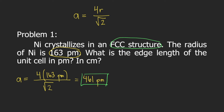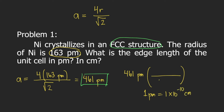The problem is also asking for the edge length in centimeters. What we need to do is convert 461 picometers to centimeters. You put 1 picometer on the bottom, and on top you put 1 times 10 raised to negative 10 centimeters. Picometers will cancel, and your unit will become centimeters. This is equal to 4.61 times 10 raised to negative 8 centimeters.